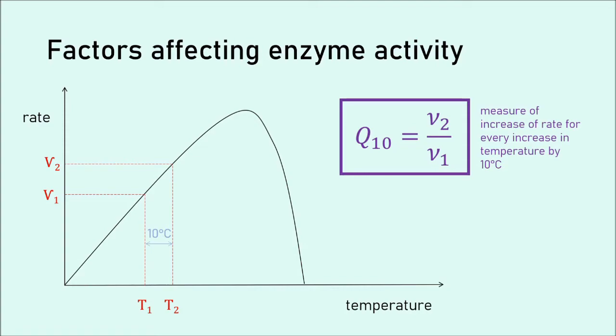Now if we select T1 and T2 such that they are 10 degrees apart, we can then divide V2 by V1 and we will get a certain value called Q10. In enzymology, Q10 is the measure of increase of rate for every increase in temperature by 10 degrees. So basically this is a quantitative representation of how the temperature affects the rate of the reaction. So this means for every 10 degrees increase in temperature, by how much does our rate of reaction increase? In other words, if Q10 is two, that means that for every 10 degrees increase, the rate of the reaction doubles. If it's three, then it trebles. If it's four, then it quadruples and so on. However, this only applies up to the optimum temperature when the enzyme has not yet denatured.